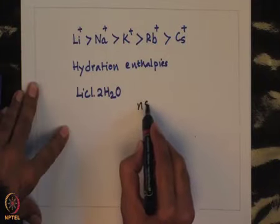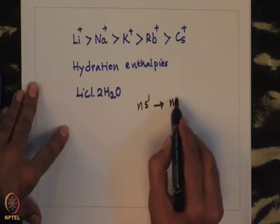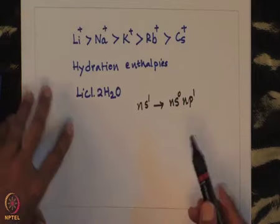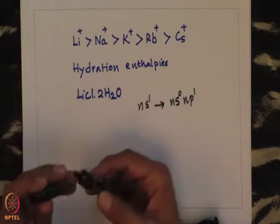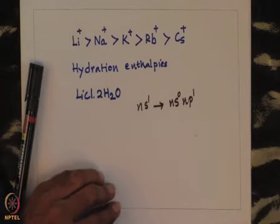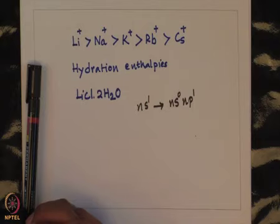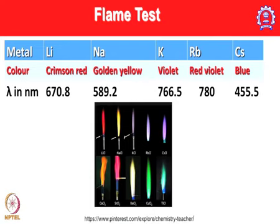The flame color results from the ns¹ electron being promoted to np¹ and then emitting radiation in the visible region when returning to the ground state. Lithium shows crimson red at 670.8 nm, sodium shows golden yellow at 589.2 nm, potassium shows violet at 766.5 nm, rubidium shows red-violet at 780 nm, and cesium shows blue at 455.5 nm.